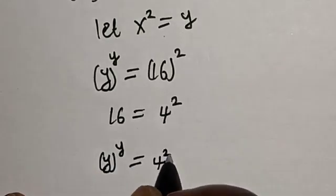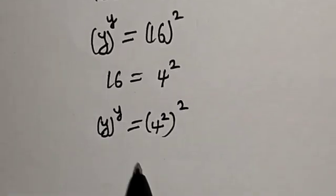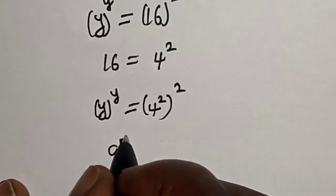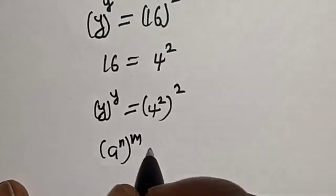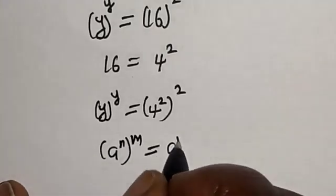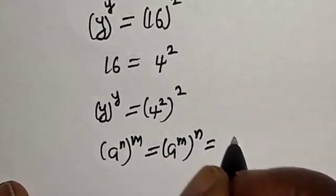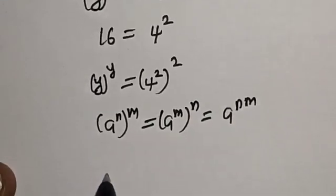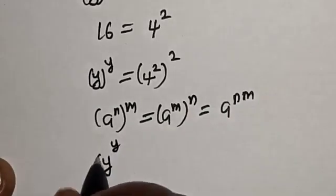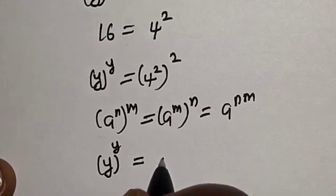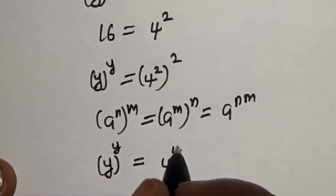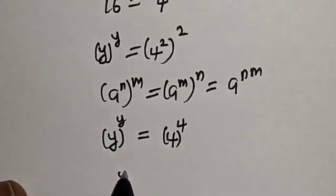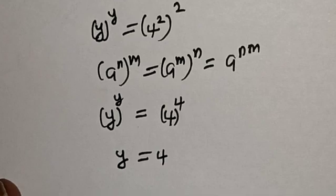But 16 is equal to 4 squared. Now let's replace — we have y raised to the power y is equal to 4 squared, then squared. Remember the rule that a raised to power n raised to power m is equal to a raised to power nm. This becomes y raised to the power y is equal to 4 raised to the power 2 times 2, which is 4 raised to the power 4.